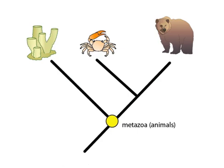Let's look at a pretty simple example to start with. From left to right, we have a sponge, a crab, and a bear. Crabs and bears are more closely related to each other than either are to the sponge, so their black lineage lines intersect first, here.